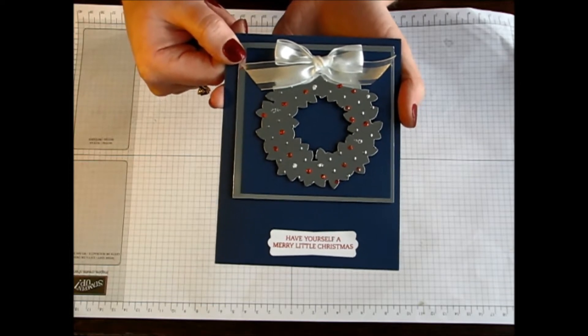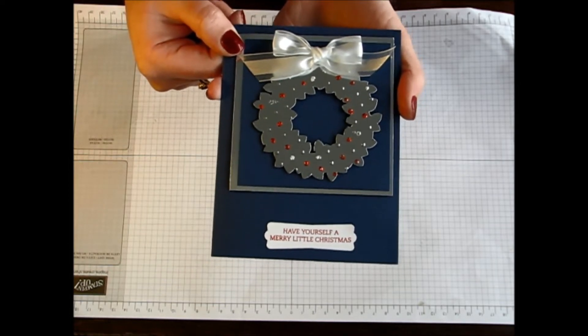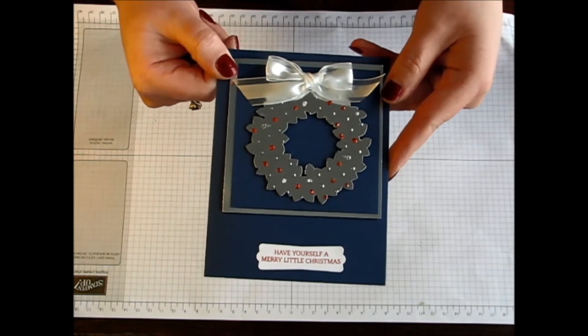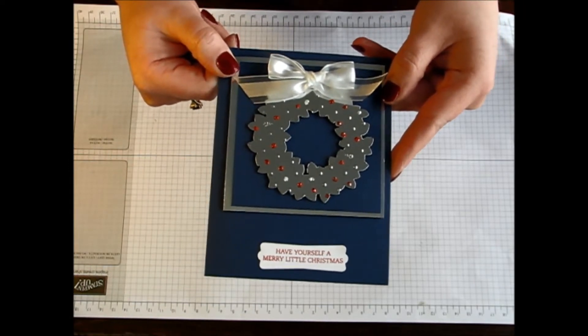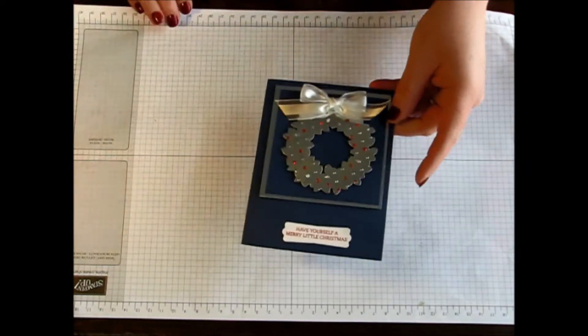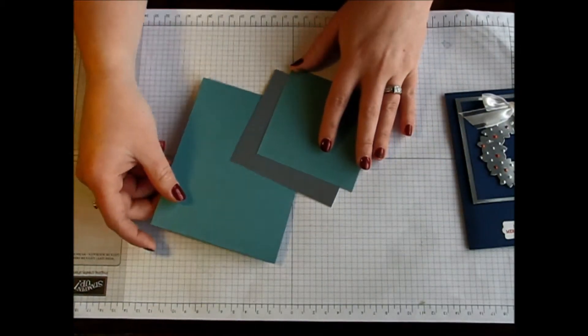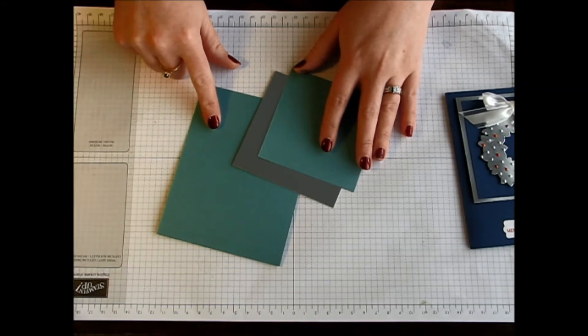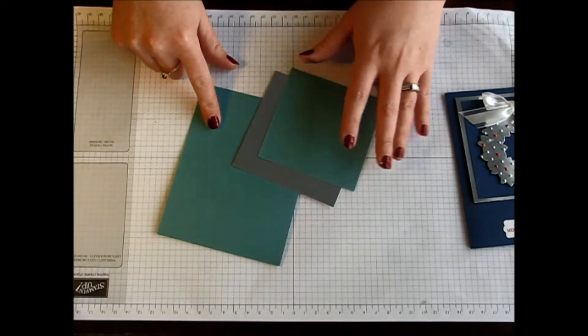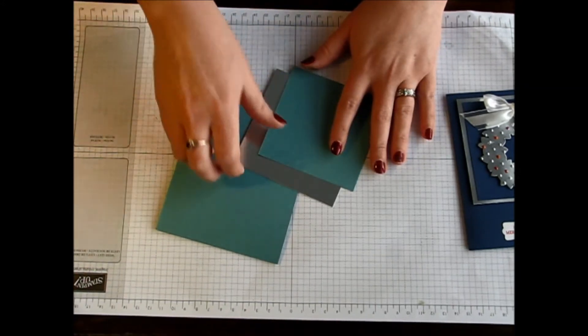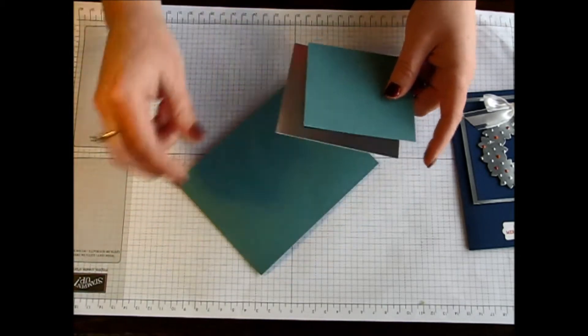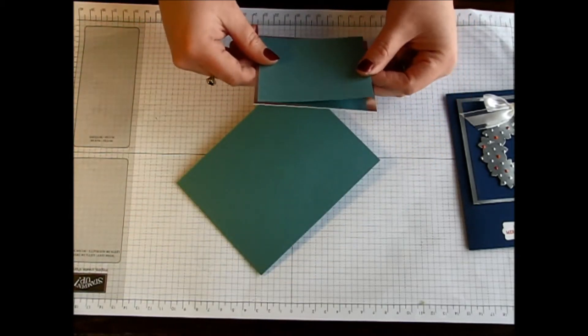Today I am going to show you another sample but using a different embossing folder and I am also going to show you a little trick on how to get the most out of your silver foil. So let's get started. Today I am going to be using some of the Lost Lagoon. I just thought I would do a different color scheme just to kind of show you a different sort of sample.